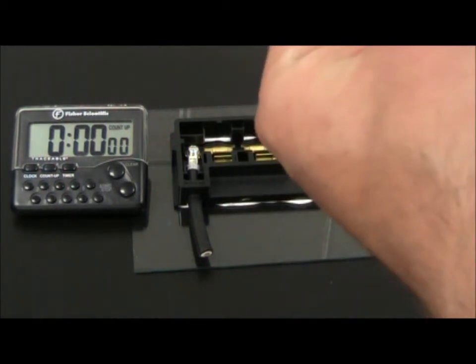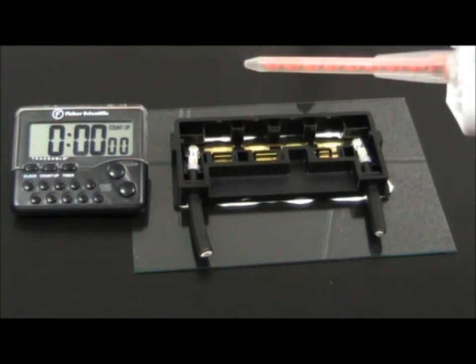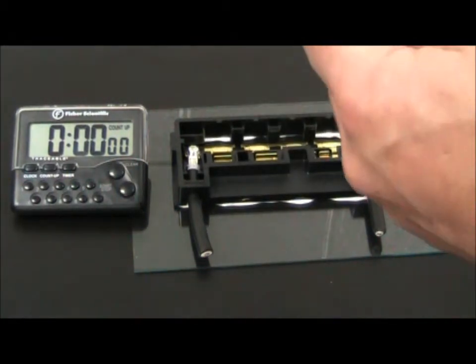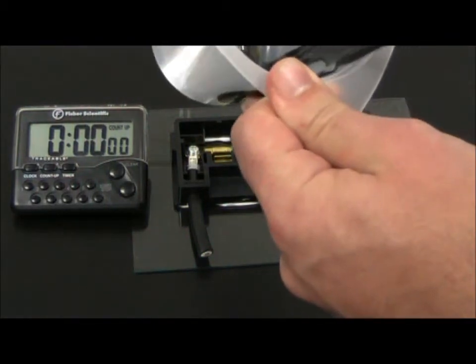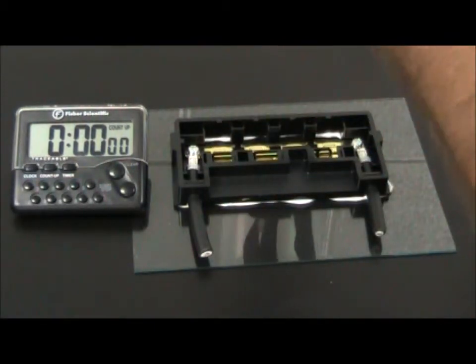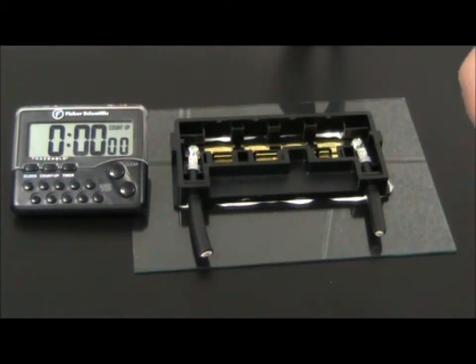The static mixer is actually what mixes the material as it is extruded out of the cartridge. So again just dispense enough to the point where you don't see any air bubbles in it. And now we're ready to go ahead and dispense inside of the junction box.